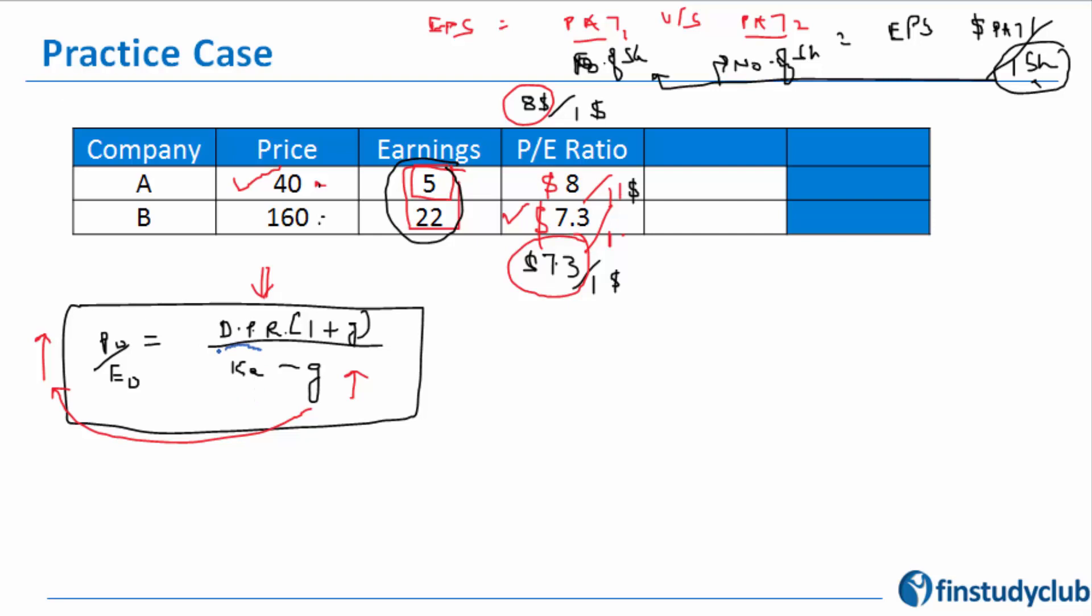I'm sure by looking at this fundamental, the thought must be crossing your mind that Ke also has a role to play. While we looked at PE, we just normalized earnings. While we looked at PEG, we normalized the earnings as well as growth.